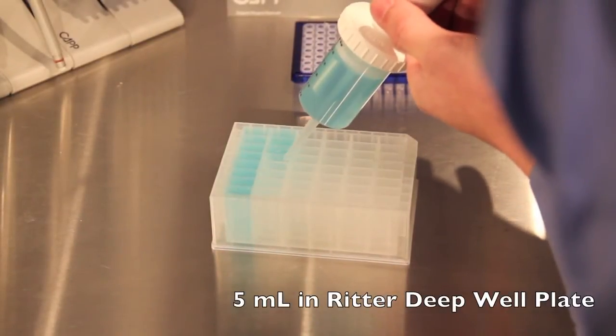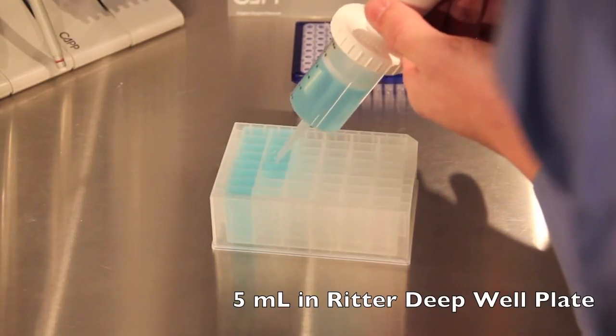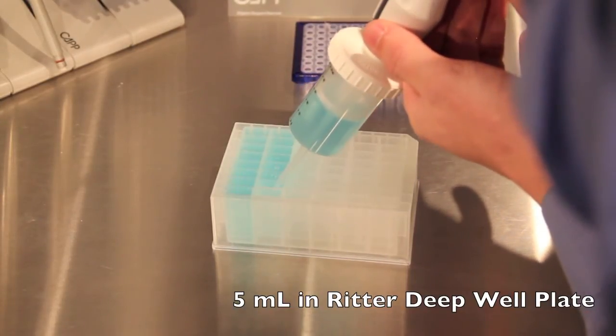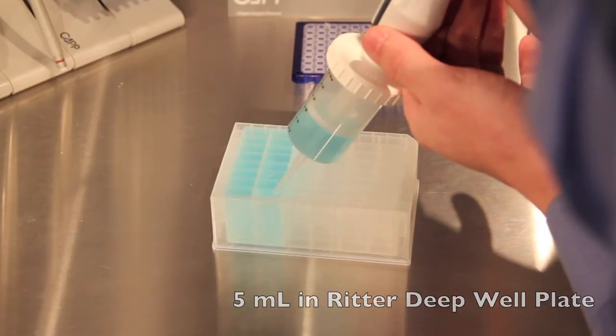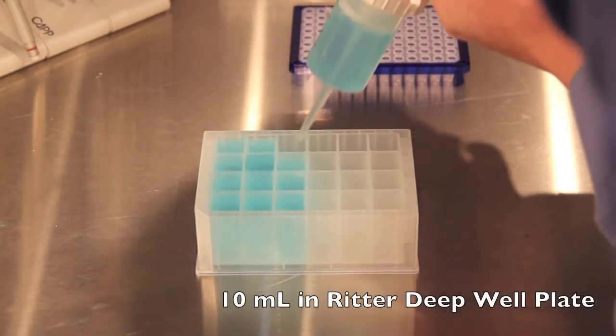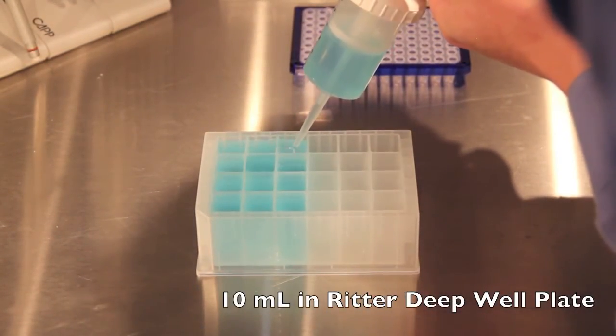Using the same 50 mil syringe, we can put 5 mils into our Ritter deep well plate. And here we are putting 10 mils into our 10 mil Ritter deep well plate.